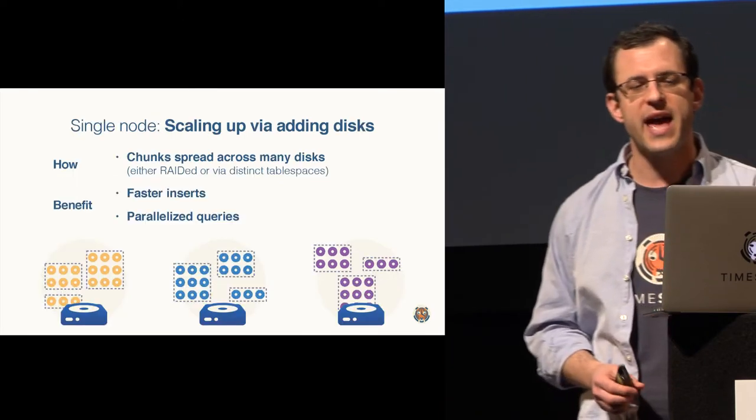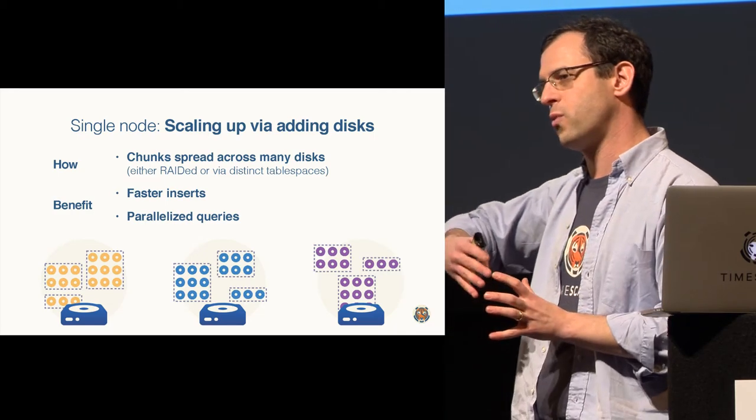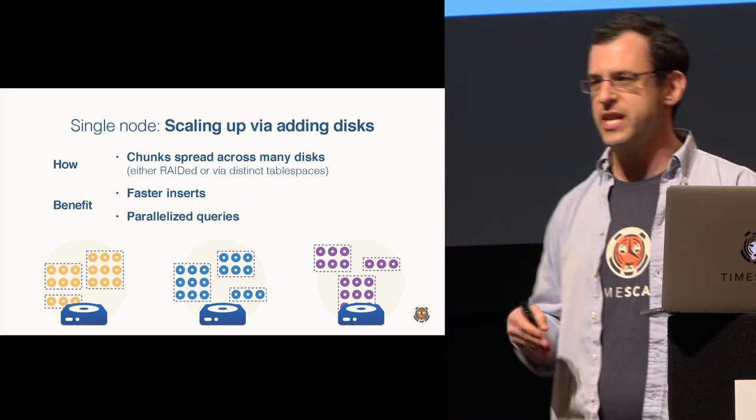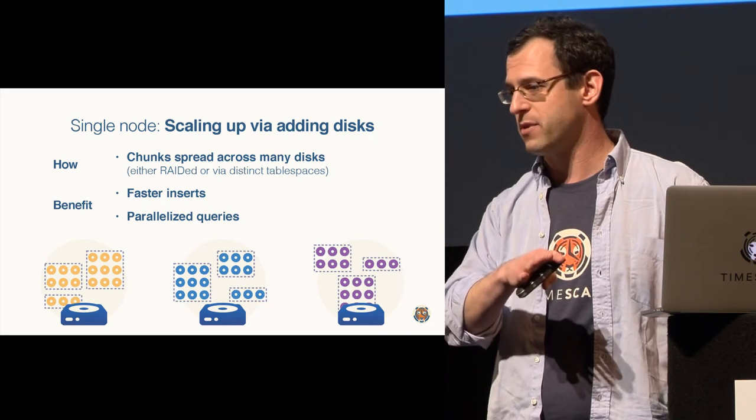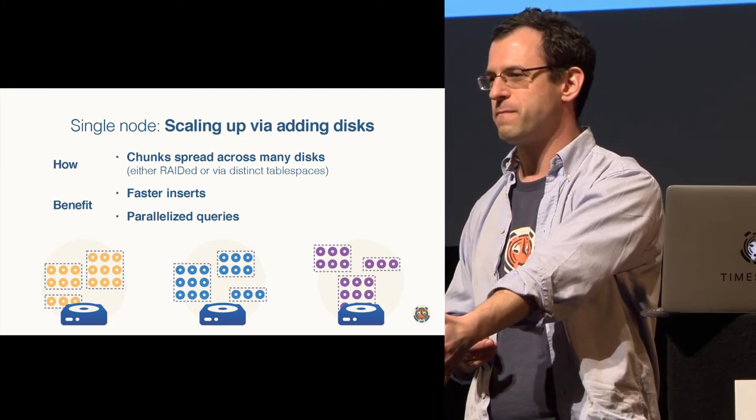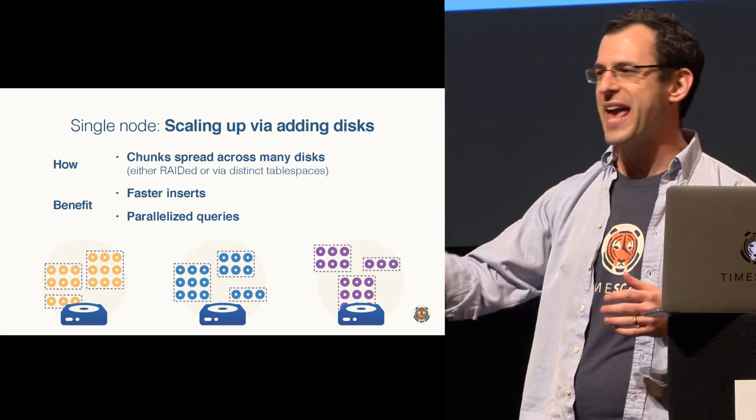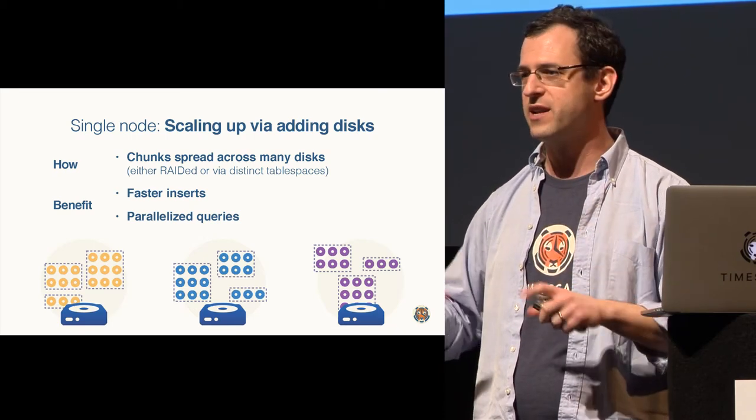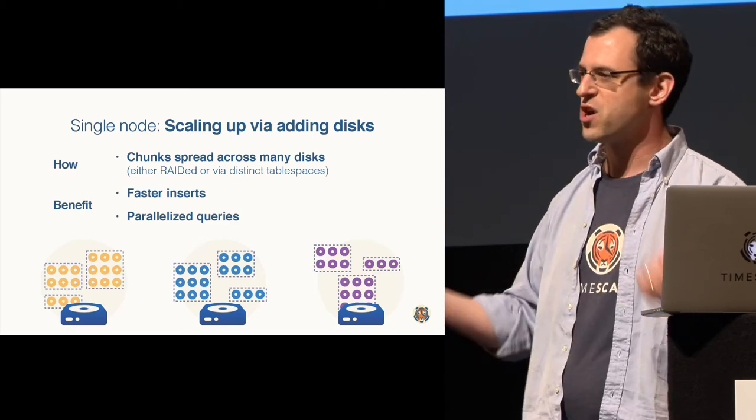The interesting thing about this chunking design is that it's the same basic architecture for queries as we have for single node, and as we release next year for the clustered version. One of the things it allows us to do, even on a single node, is to scale up by adding many disks. You could do this through RAID, or also in Postgres through table spaces. If we move from Postgres, usually a table space is a mount point, so you have to map a table to a single mount point. But here we could have one hypertable over many tables.